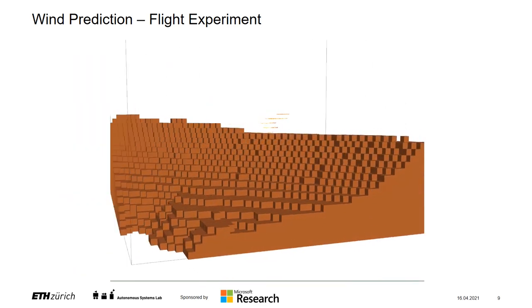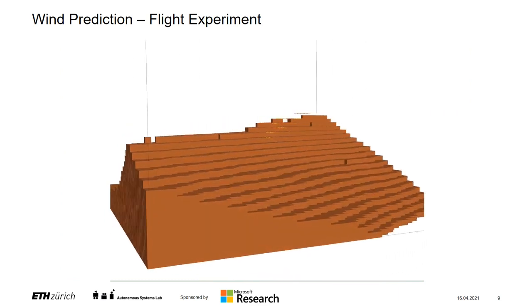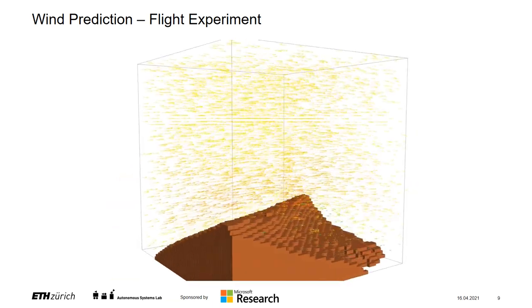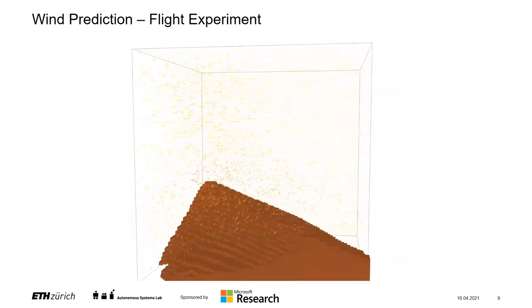Using only a small segment from the full flight results in the following sparse measurements covering only a small part of the full domain. However, the model is able to predict a reasonable flow that respects the terrain.